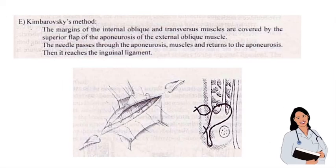Next, we have Kimbarovsky's method. The margins of the internal oblique and transversus muscles are covered by the superior flap of the upper aponeurosis of the external oblique muscle. The needle passes through the upper aponeurosis, muscles, and returns to the upper aponeurosis, then reaches the inguinal ligament.